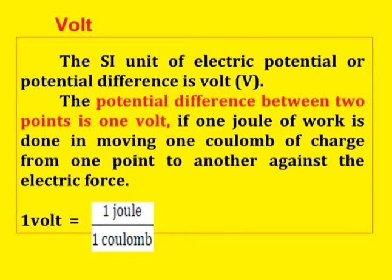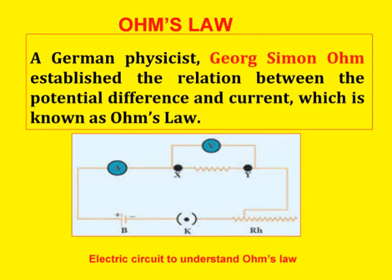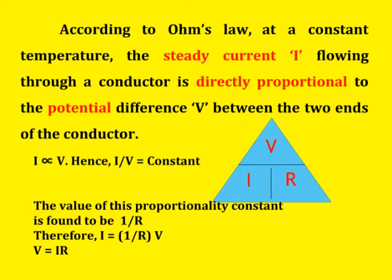Next is a very important topic — Ohm's law. The German physicist George Simon Ohm established the relation between potential difference and current, known as Ohm's law. According to Ohm's law, at a constant temperature, the steady current I flowing through a conductor is directly proportional to the potential difference V between the two ends of the conductor. The formula is I ∝ V, or I / V = constant, giving V = IR.